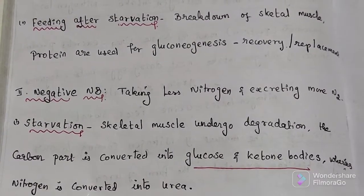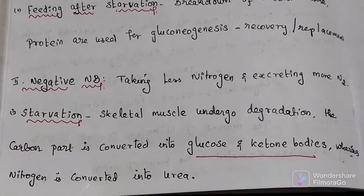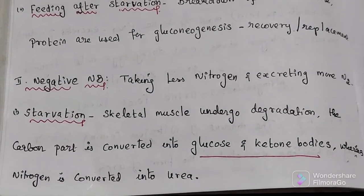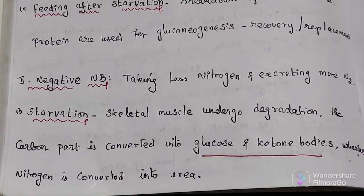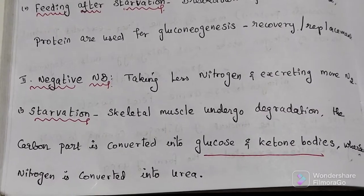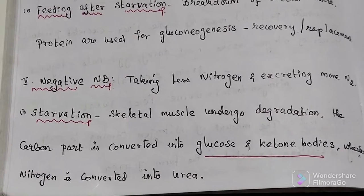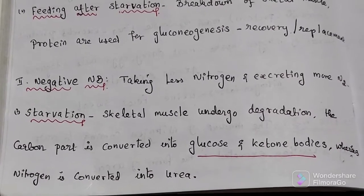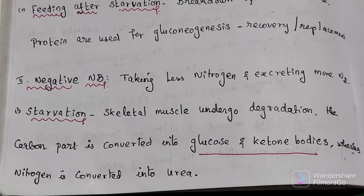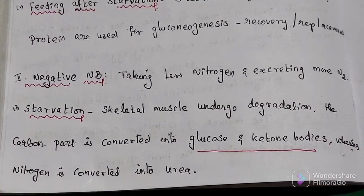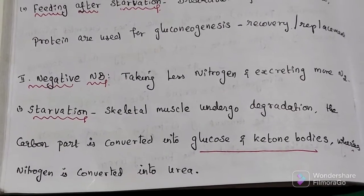The first example of negative nitrogen balance is starvation. During starvation, skeletal muscles undergo degradation — the carbon part is converted into glucose and ketone bodies, while the nitrogen is converted into urea. So more urea is going out of the body. Food is not being taken in, so nitrogen is not coming in — that is why starvation leads to negative nitrogen balance.